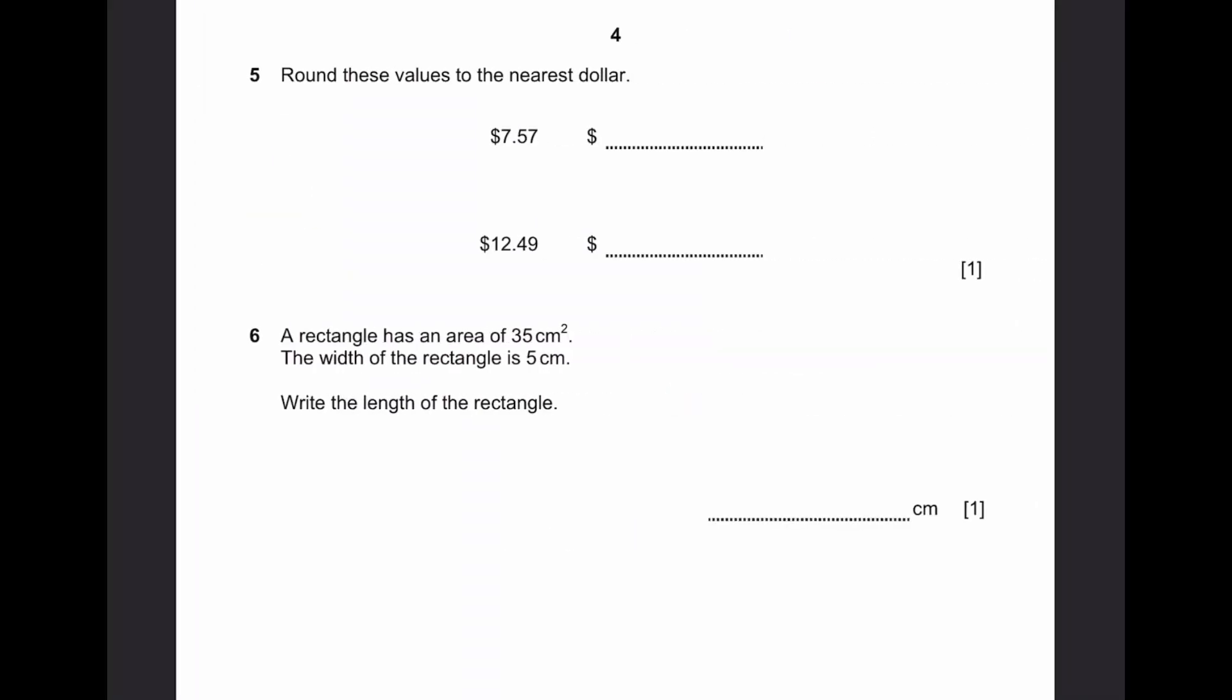Question 5. What are these values in New Zealand dollars? 7.57 dollars allowance up because 5 is there in the 10th place, so 8 dollars. 12.49. There's a 4 here in the 10th place, and that's less than 5. So we don't round up. It's just 12 dollars.